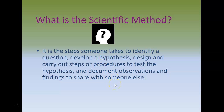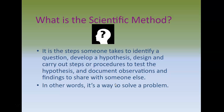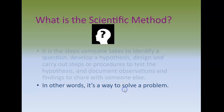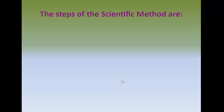That is a whole lot of words to say something very simple. It is essentially a way to solve a problem — in a way that you know you came up with the best possible solution and one that you can repeat over and over again. So let's talk a little more about the steps of the scientific method. Depending on where you look, different textbooks and different sources have a different number of steps.